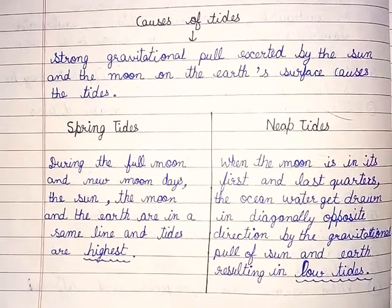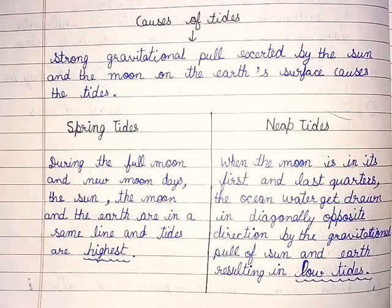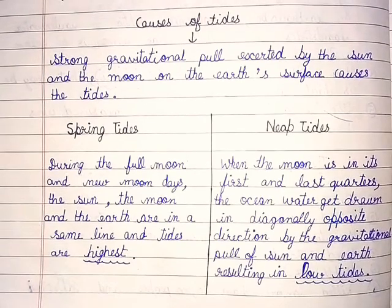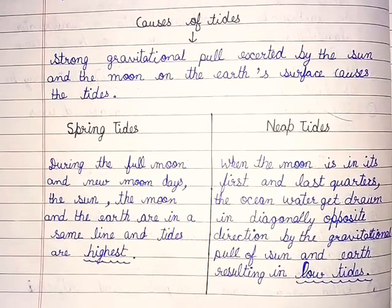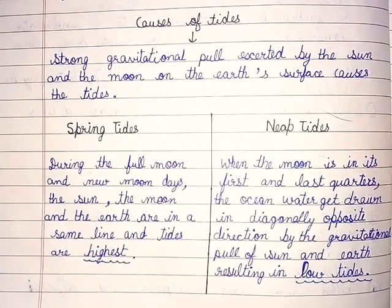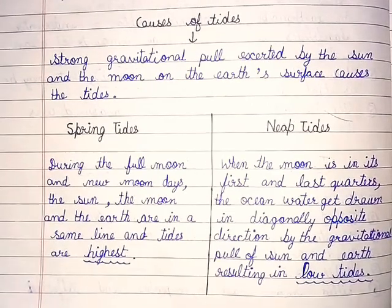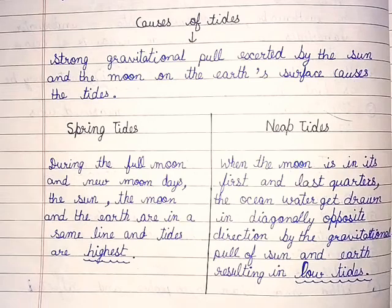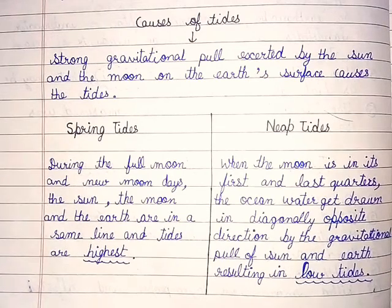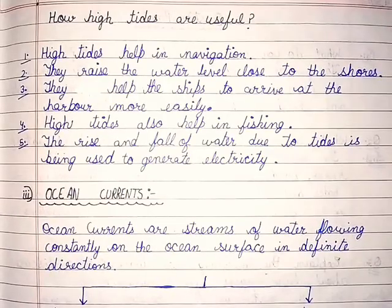Neap tides: when the moon is in its first and last quarters, the ocean water gets drawn in diagonally opposite directions by the gravitational pull of the sun and the earth, resulting in low tides.